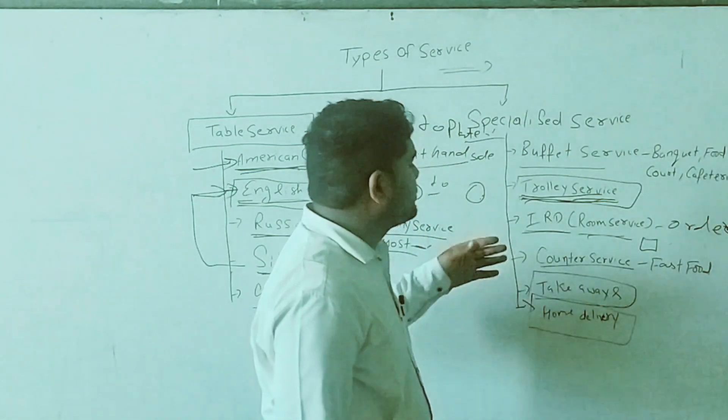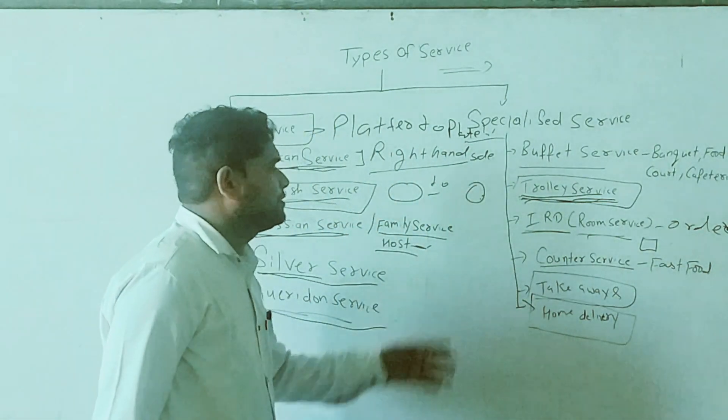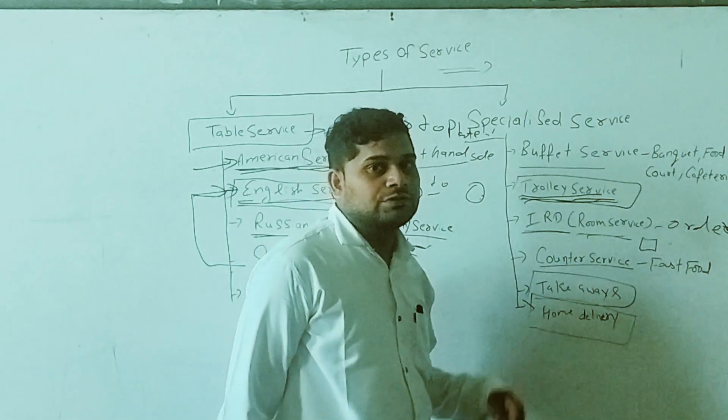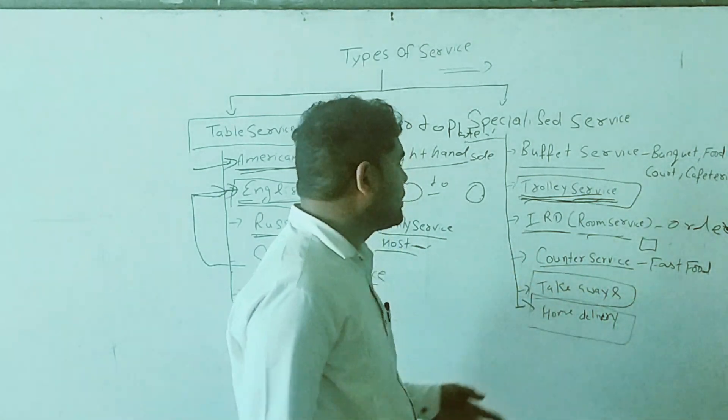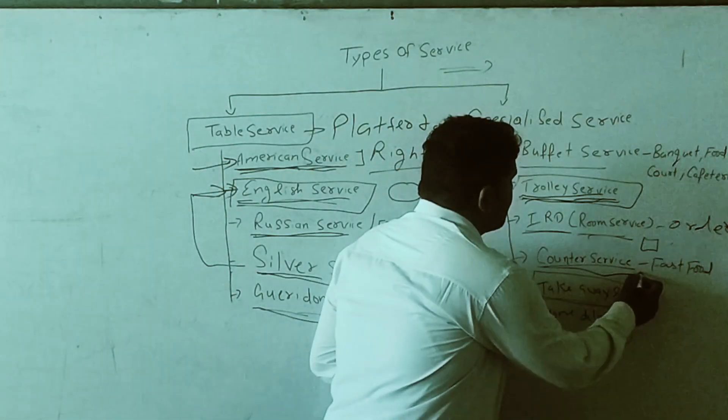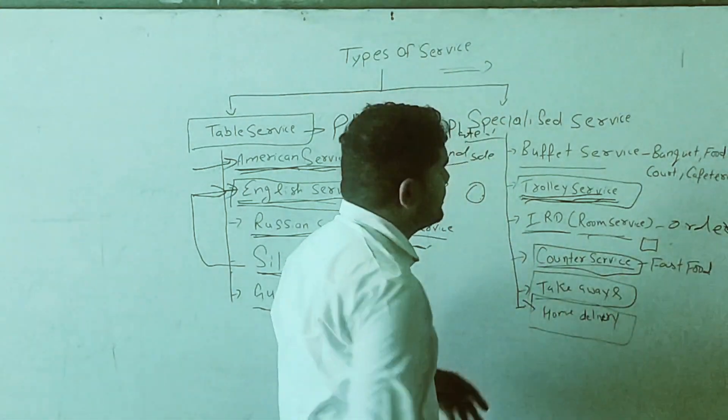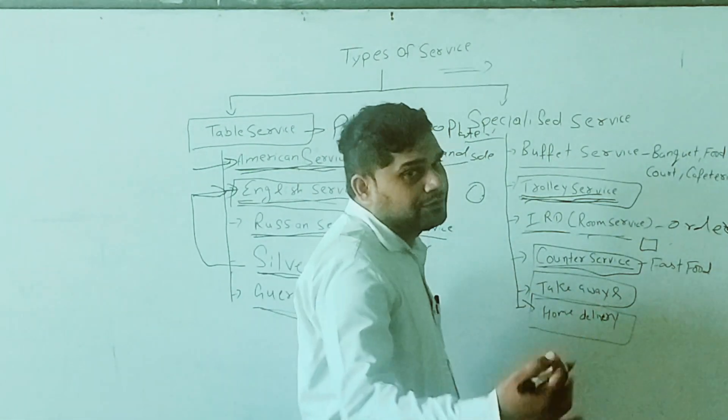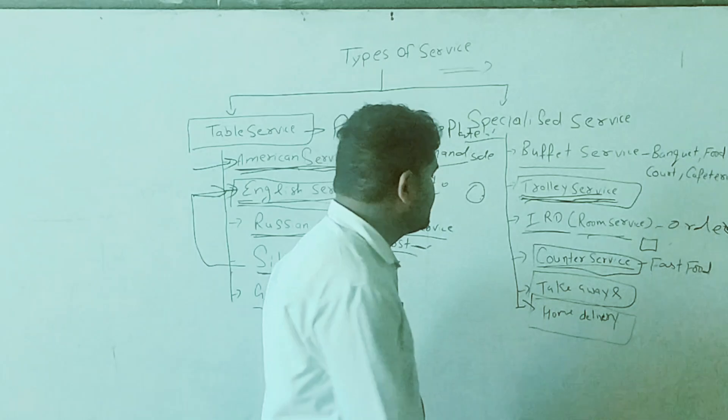And next one is counter service. Basically this concept is also famous in fast food, like in Pizza Hut, McDonald's. We can place our order at a counter, and then the food will be delivered within 10 to 15 minutes.